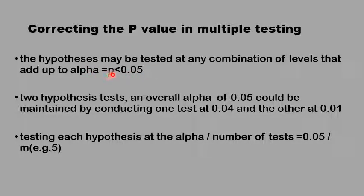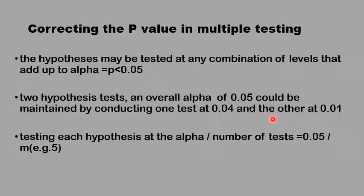The alpha p-value — here 0.05 — should apply to the total combination of questions on that particular outcome variable, say the time to recurrence. All the questions about the relation of different factors to the time of recurrence should add up to 0.05 combined. So you could have some tests at a p-level of 0.04 and others at 0.01, as long as the total number of tests run on the outcome variable adds up to less than 0.05 — then you can accept these as valid significant results.